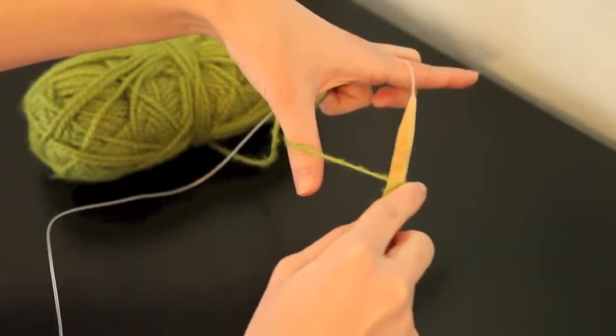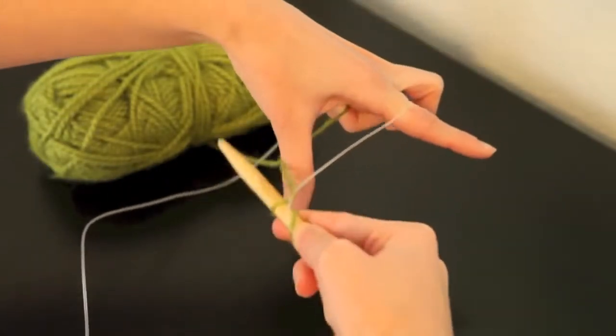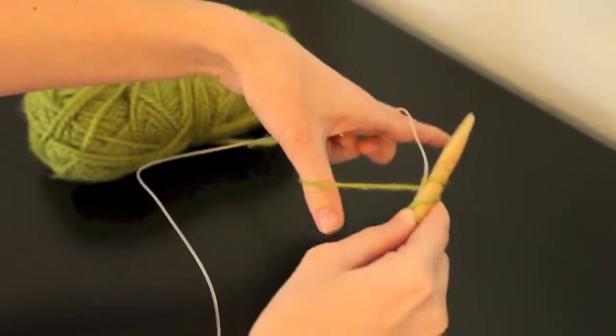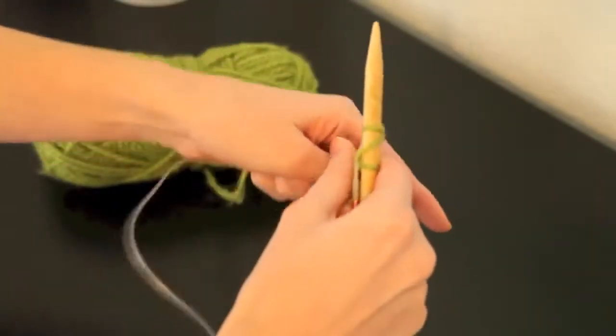Now the second step in the process is to bring it all the way around and then down through the cable and yarn and then up by the cable. So that'll be your second stitch.